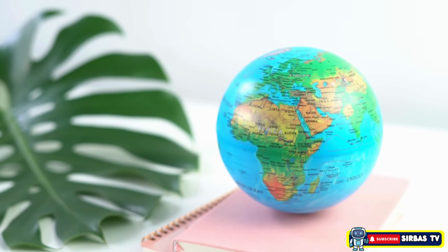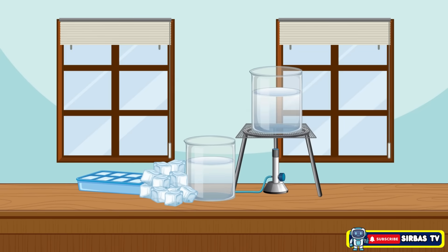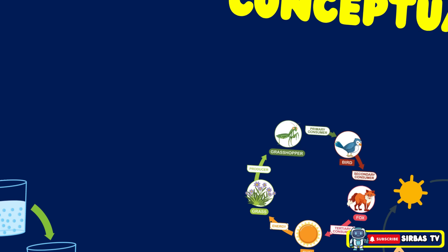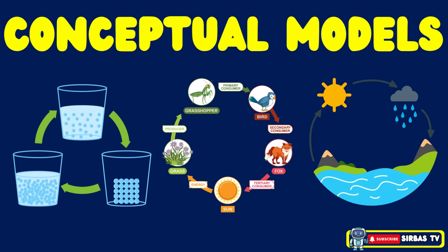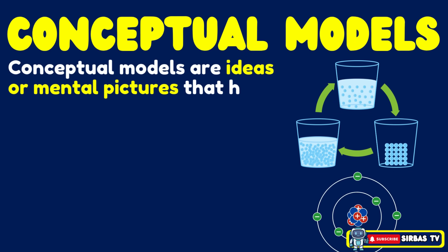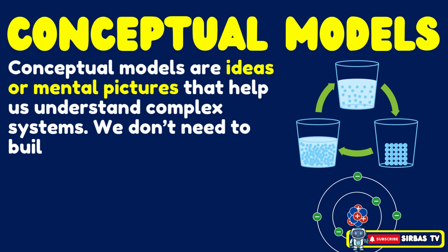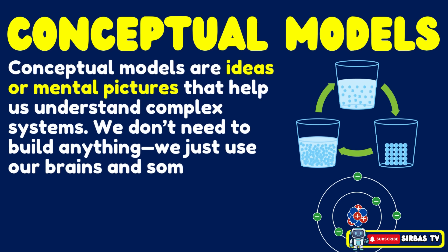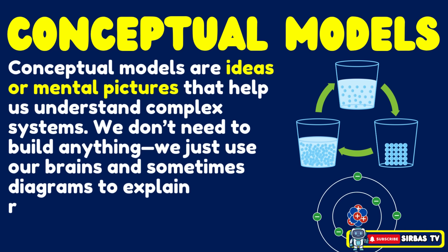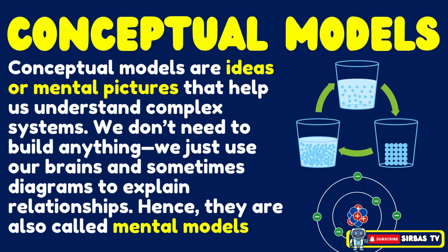Now let's think deeper. Imagine you are explaining the states of matter — solid, liquid, or gas — but you cannot see molecules. How would you explain it? That's where conceptual models come in. Conceptual models are ideas or mental pictures that help us understand complex systems. We do not need to build anything; we just use our brains and sometimes diagrams to explain relationships. Hence, they are also called mental models.